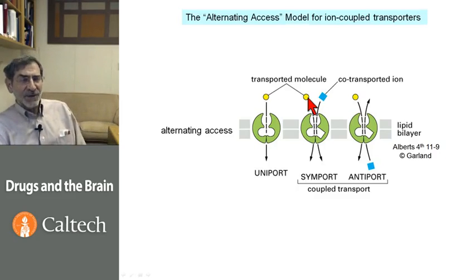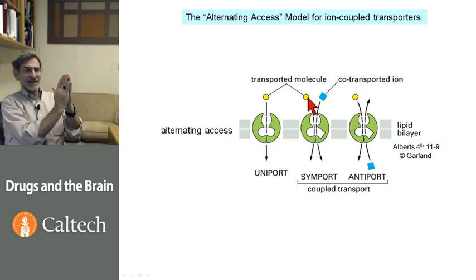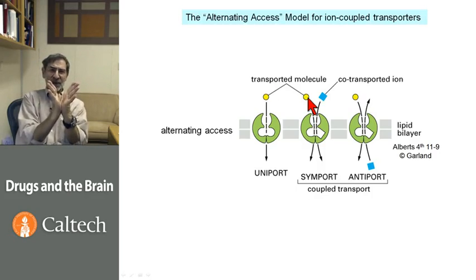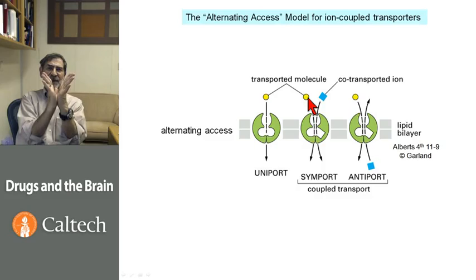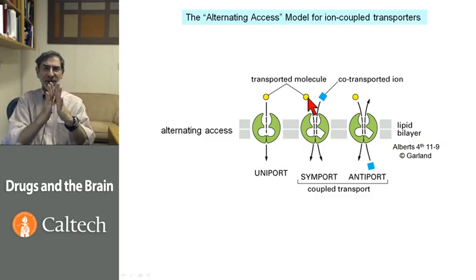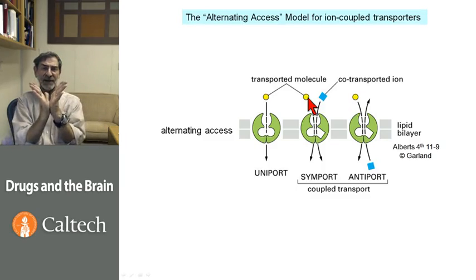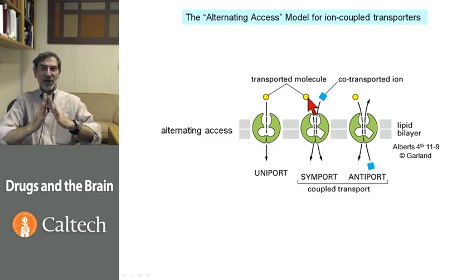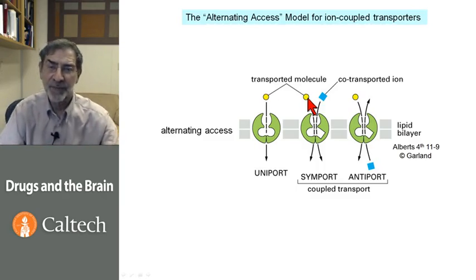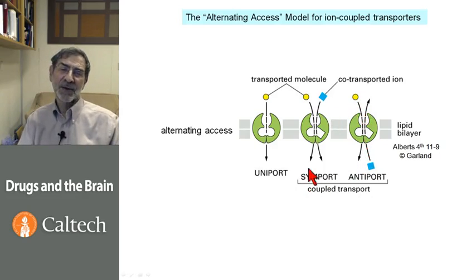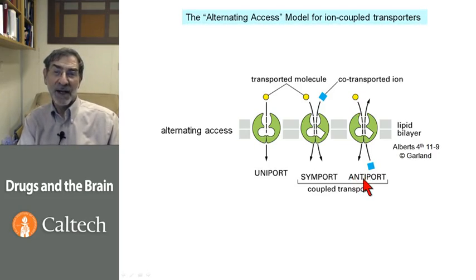The alternating access model says that the transmitter-transporter can exist facing two different compartments. When it faces the outside compartment it waits for various substrates to bind, then undergoes a conformational change which releases those substrates to the other compartment. Then it flips back and repeats. This is called symport — transporting together — or antiport — transport in opposite directions.